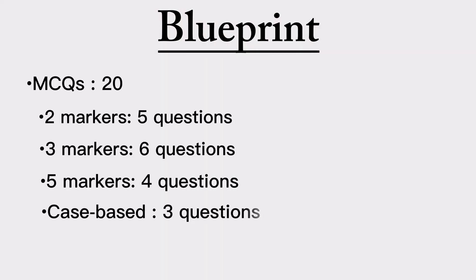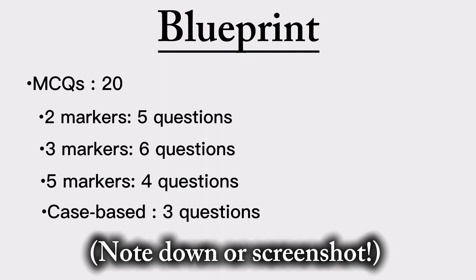Let's decode the blueprint of your half-yearly maths paper. First, there will be 20 MCQs. Then 5 two-marker questions, also known as short-answer questions. Then 6 three-marker questions, also known as medium-answer questions. Then 4 long-answer questions carrying 5 marks each. And finally, 3 case-based questions carrying 4 marks each.